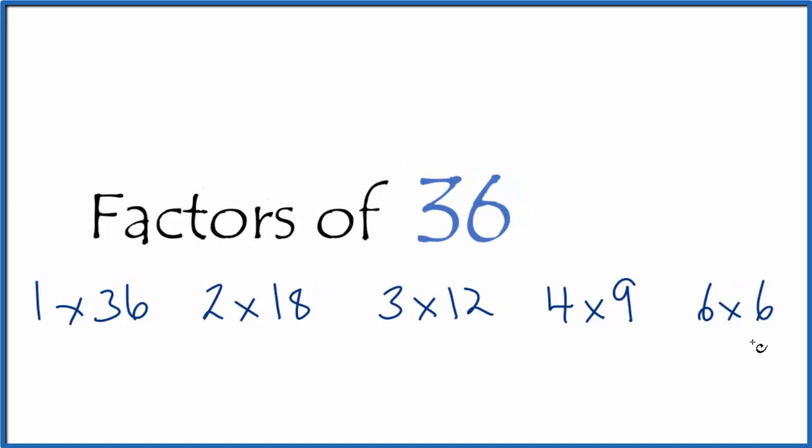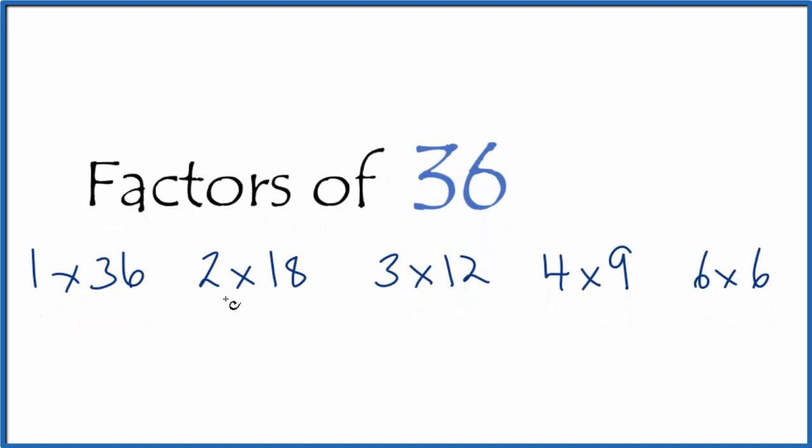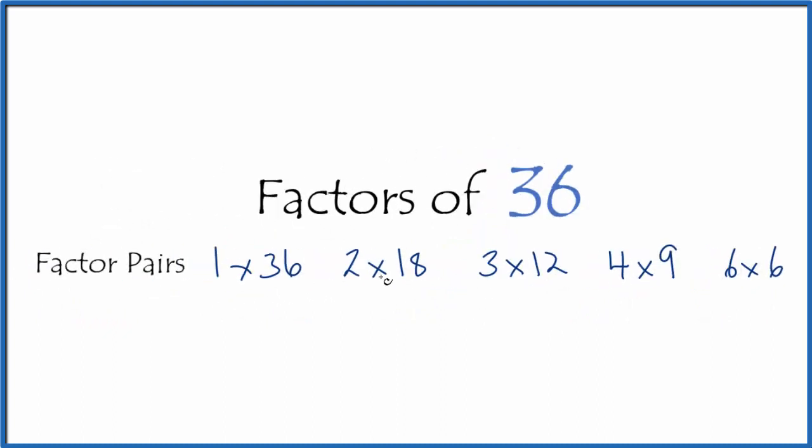And those are the only numbers that are going to go into 36 evenly. So these are what we call factor pairs. If we take all the unique numbers out of the factor pairs, we end up with... let's move these up top.